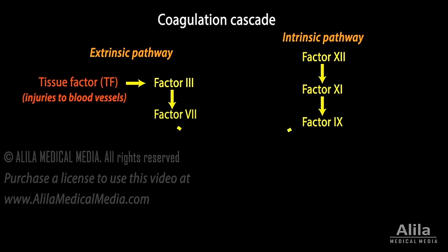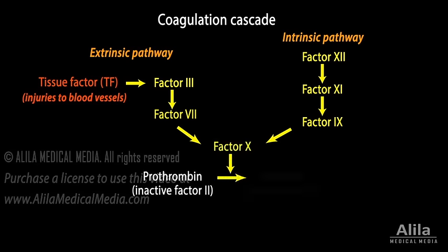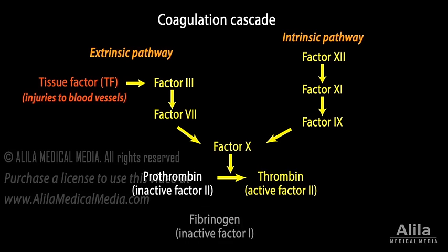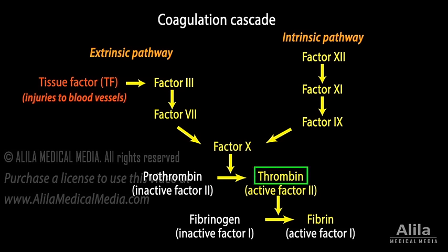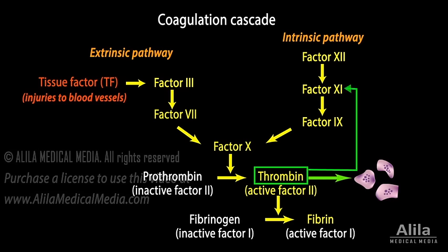The two pathways converge into a common pathway, producing thrombin and ultimately fibrin. Thrombin has the central role in the coagulation cascade. It cleaves soluble fibrinogen to generate insoluble fibrin. Thrombin also further activates platelets and initiates a positive feedback loop that is essential for clot propagation.